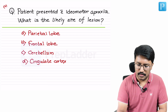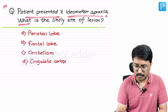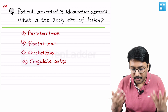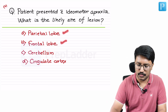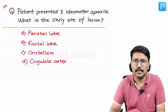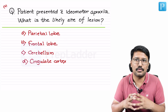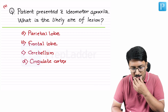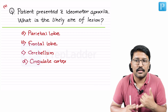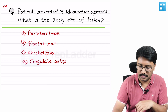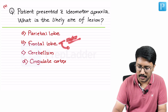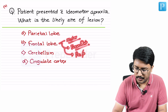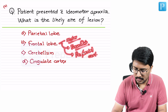Question four: patient presented with ideomotor apraxia — what is the most likely site of lesion? The question asks to localize to the lobe. We need to know the typical findings of frontal lobe, parietal lobe, occipital lobe, cerebellar lesion, and cingulate cortex. Important structures in the frontal lobe: motor cortex, premotor cortex, and prefrontal cortex.